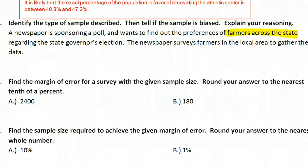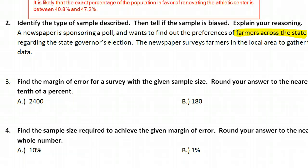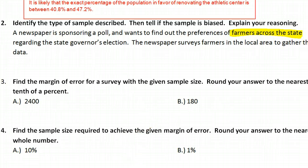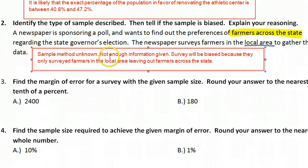This was a poorly worded question because we don't have enough information to know what the sampling method was. We don't know how they did the survey. But we can say that it is biased because the population is farmers across the state, but the newspaper only surveyed farmers in the local area. That's going to make it biased because of only doing the local area.